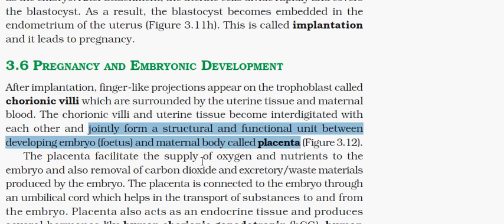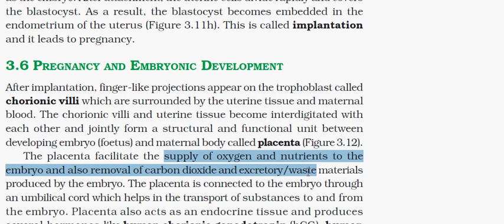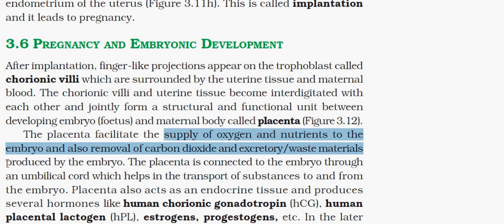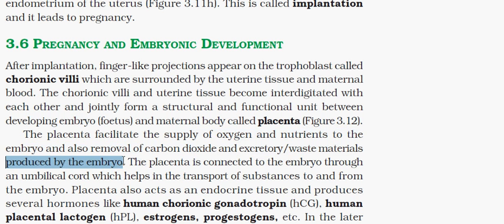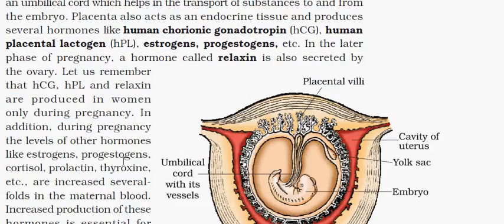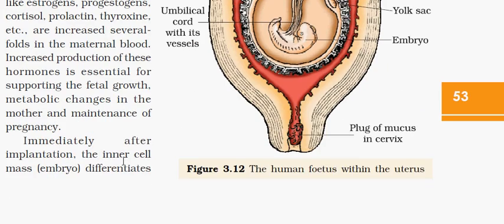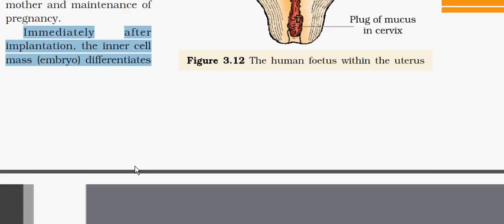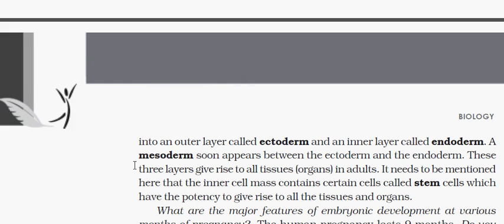Immediately after implantation, the inner cell mass differentiates into an outer layer called ectoderm and an inner layer called endoderm. Then, in between, a layer develops called mesoderm. The function of these three layers is to give rise to all the tissues and then organs in adults.